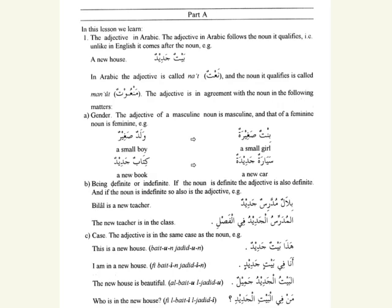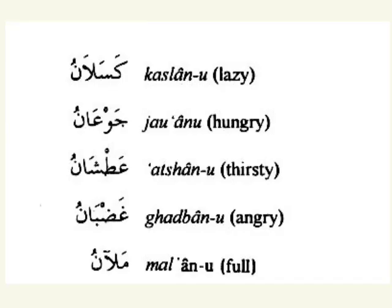And finally, a third example: 'The new house is beautiful' — El-Beitu El-Jadidu Jemilun. El-Beit is in the nominative case and it's definite, and El-Jadid is also in the nominative case and it's also definite. In this chapter, we also learn that adjectives ending in -an have no tanween. For example: Keslan — lazy; Joan — hungry; Achan — thirsty; Ghadban — angry; Mel'an — full.